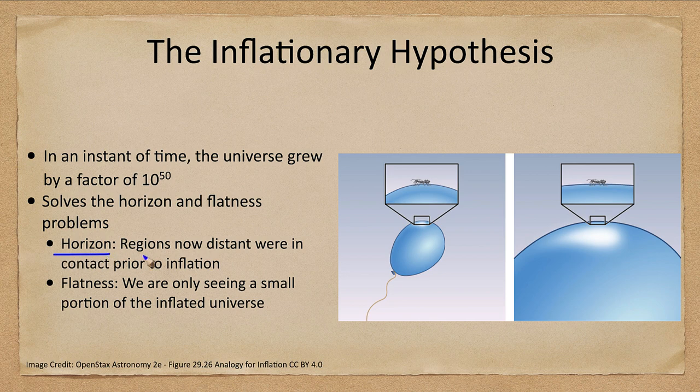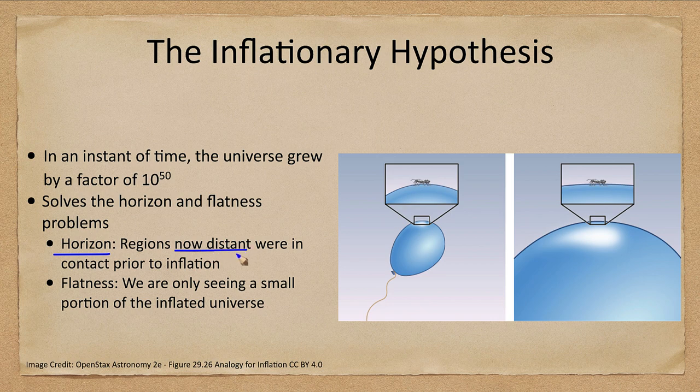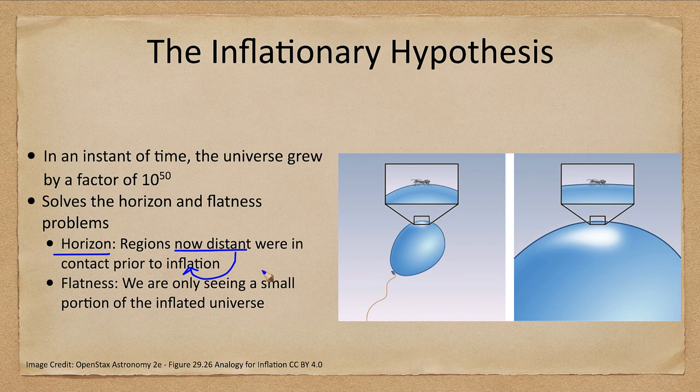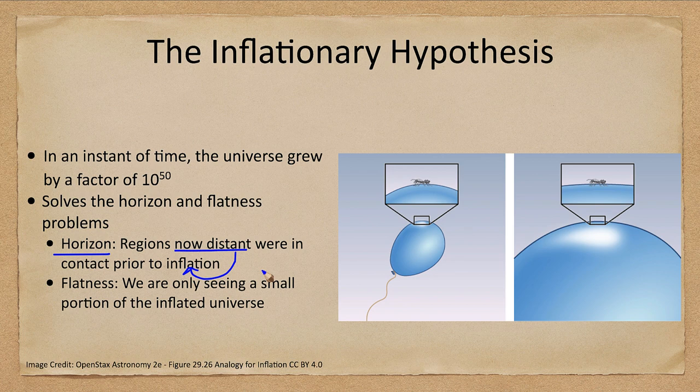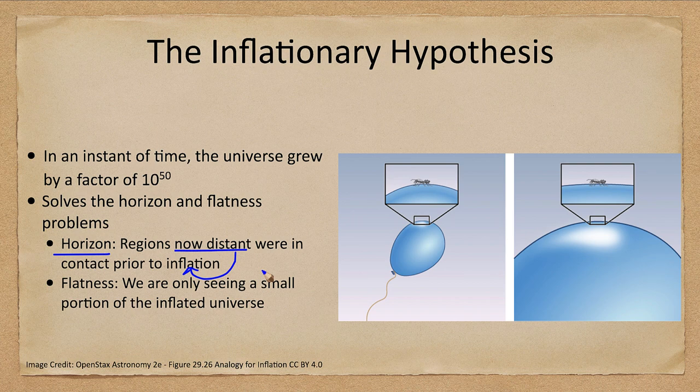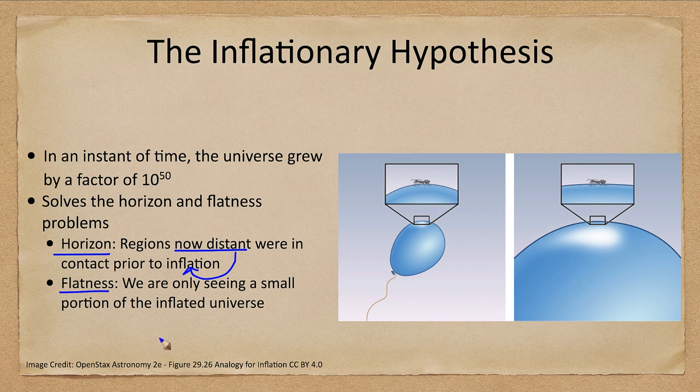The horizon problem. Now we know that these regions that are now distant were actually in contact prior to inflation occurring. So inflation yanked them apart and shoved them at great distances across the universe, but they used to be in contact and therefore they would know and would all be the same temperature.